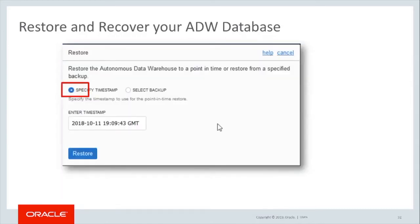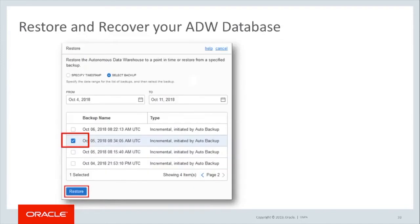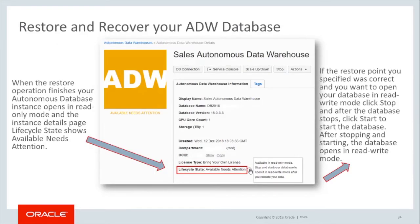This will bring up the Restore prompt. In the Restore prompt, select Specify Timestamp or Select Backup to restore to a point in time or to restore a specific backup. Select a backup from the list of backups. You can limit the number of backups you see by specifying a period using From and To calendar fields. When the appropriate backup to restore from is selected, proceed by clicking the Restore button. When the restore operation finishes, your Autonomous Database instance opens in read-only mode, and the Instance Details page lifecycle state shows Available needs attention.